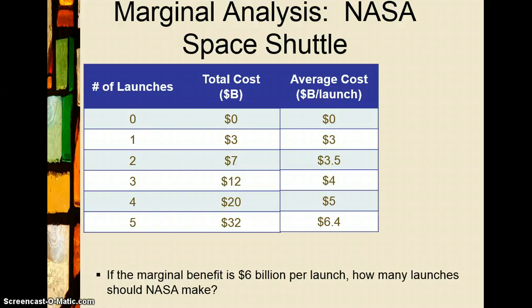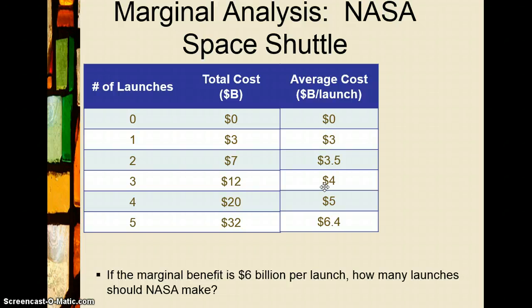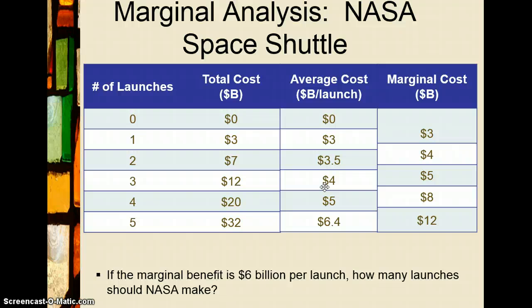Using average analysis, average cost is just total cost divided by the number of launches: three divided by one equals three, seven divided by two is three-and-a-half, twelve divided by three is four, and twenty billion divided by four launches gives an average cost of five billion. But what matters is not the average cost — it's how much extra money we have to pay for one additional launch, which is what marginal cost tells us.